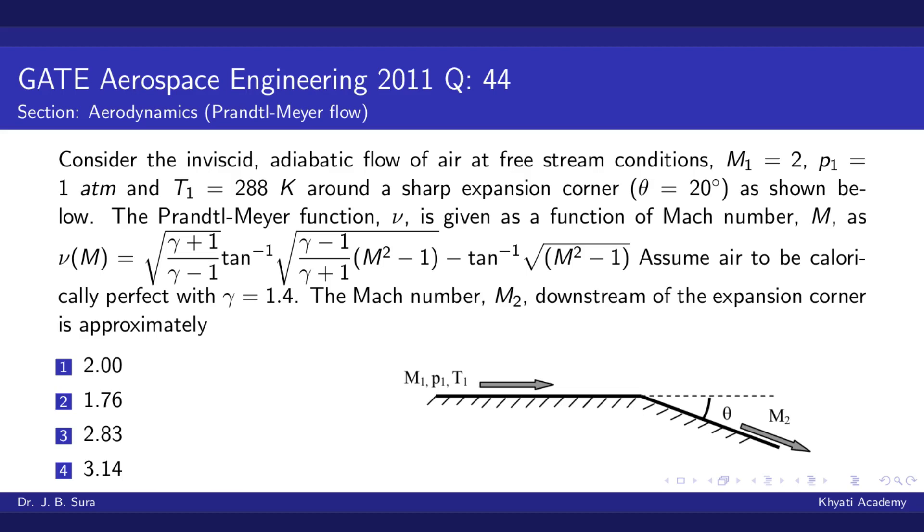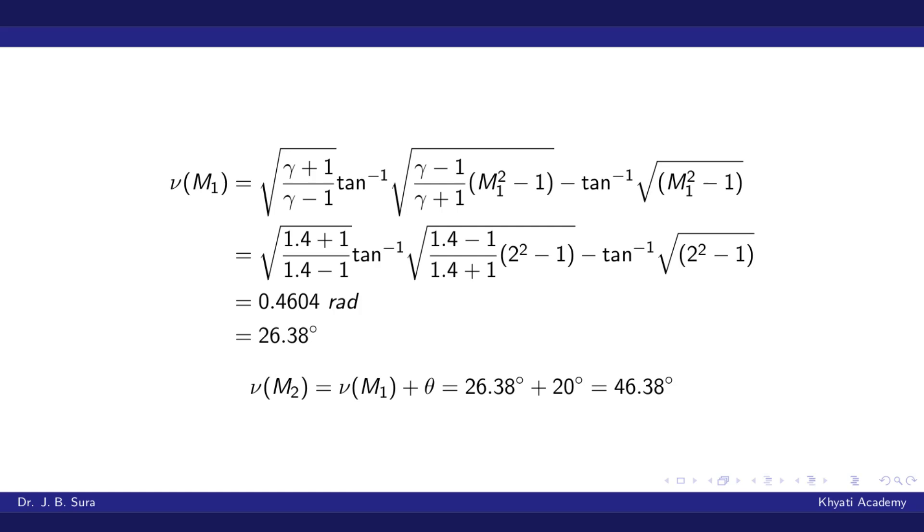First, we will calculate the Prandtl-Meyer function for M₁. The equation is: square root of (γ+1)/(γ-1) times tan inverse of square root of (γ-1)/(γ+1) times (M²-1) minus tan inverse square root of (M²-1).